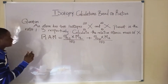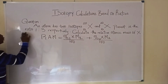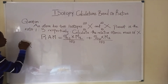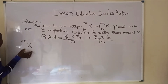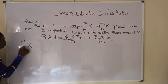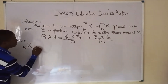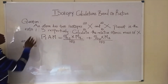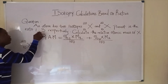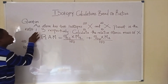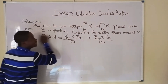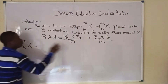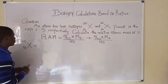Let's go ahead and determine the percentage abundance using the ratio values. For the first isotope x20, to determine the percentage abundance, we need the ratio. The ratio is 1:3 respectively, meaning 1 is for x20 and 3 is for x22, which is the second isotope.